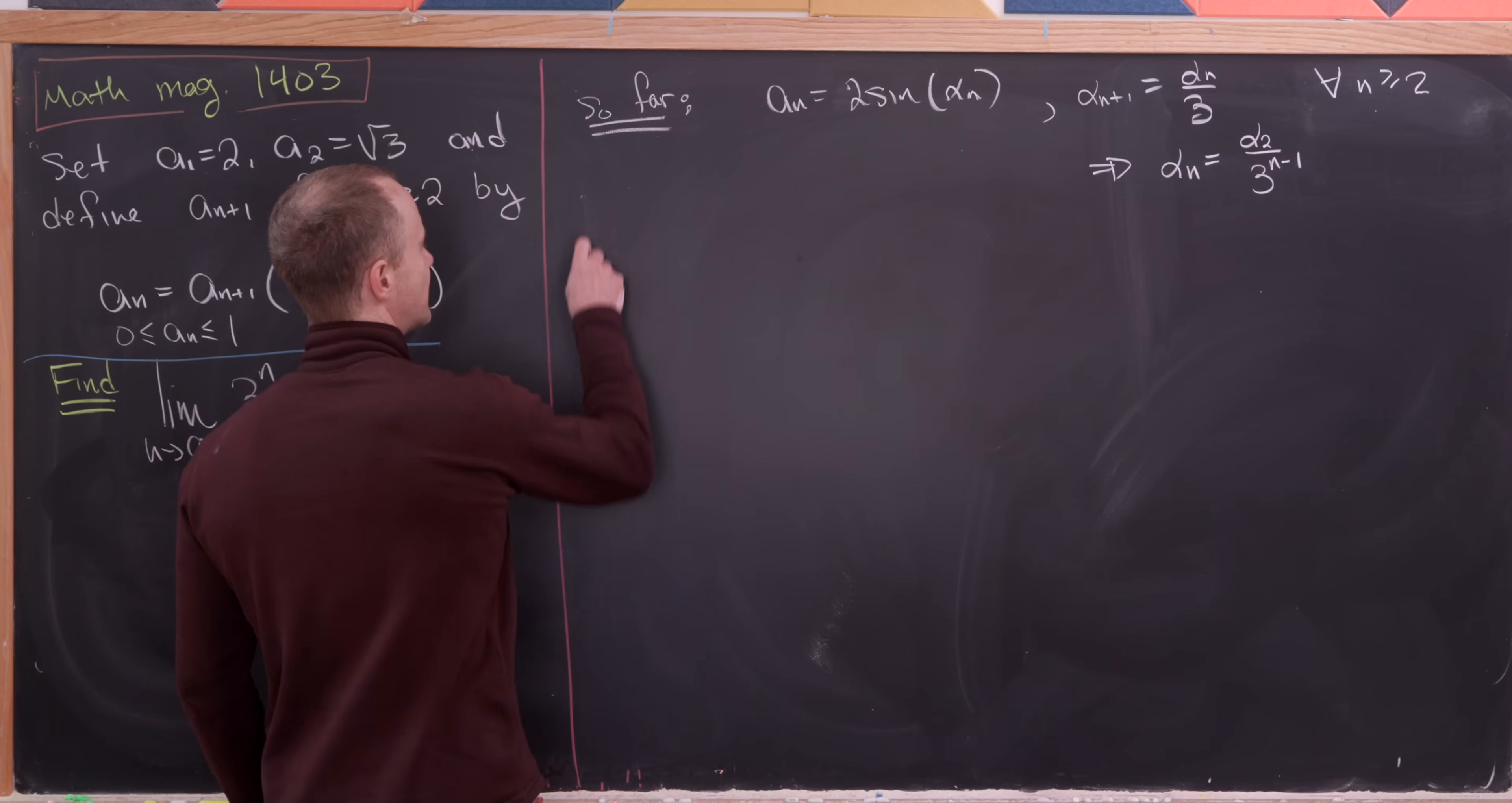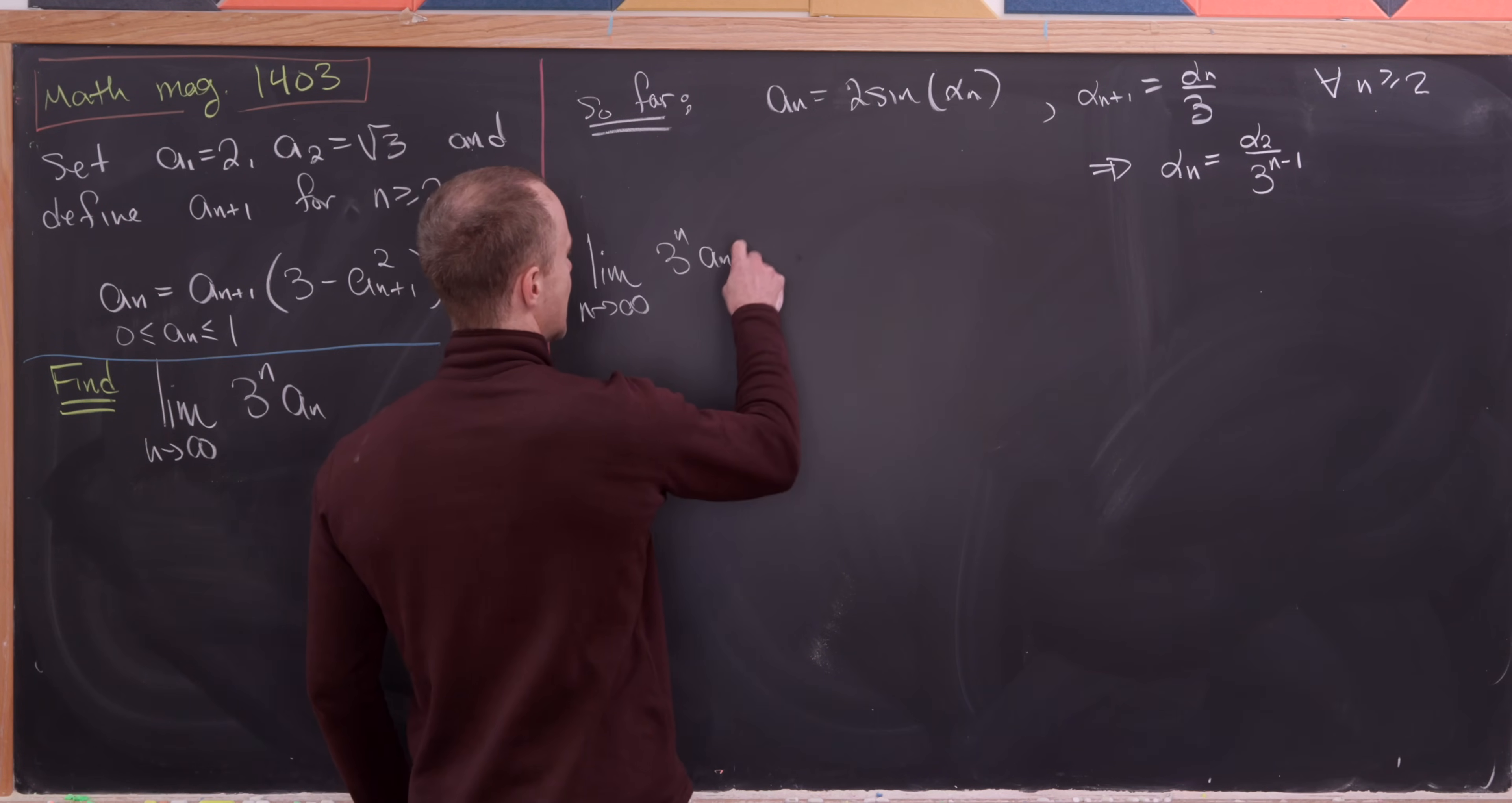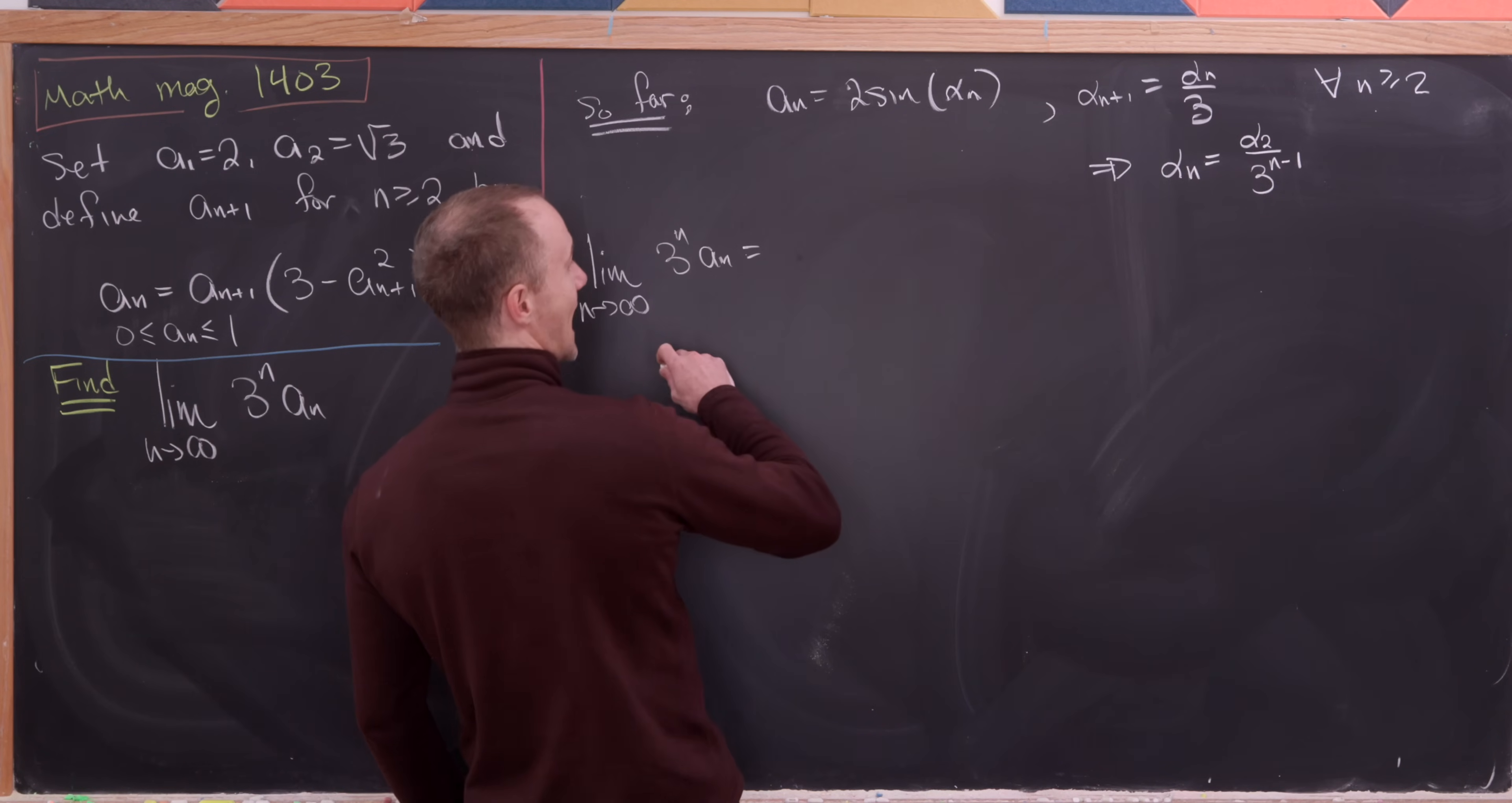And now we're ready to do our final limit. So notice that the limit as n goes to infinity of 3 to the n times a sub n can be written as,